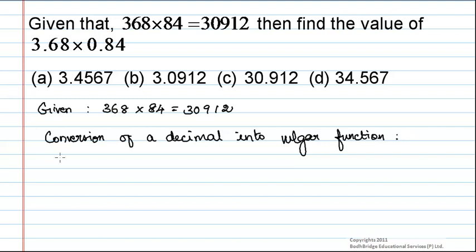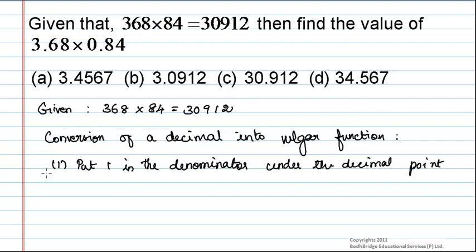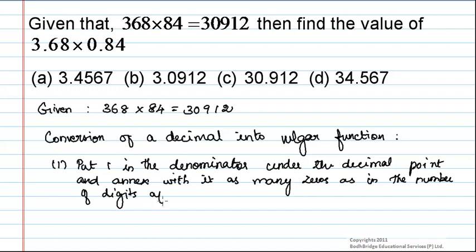There are two steps involved. Put 1 in the denominator under the decimal point and annex with it as many zeros as the number of digits after the decimal point.